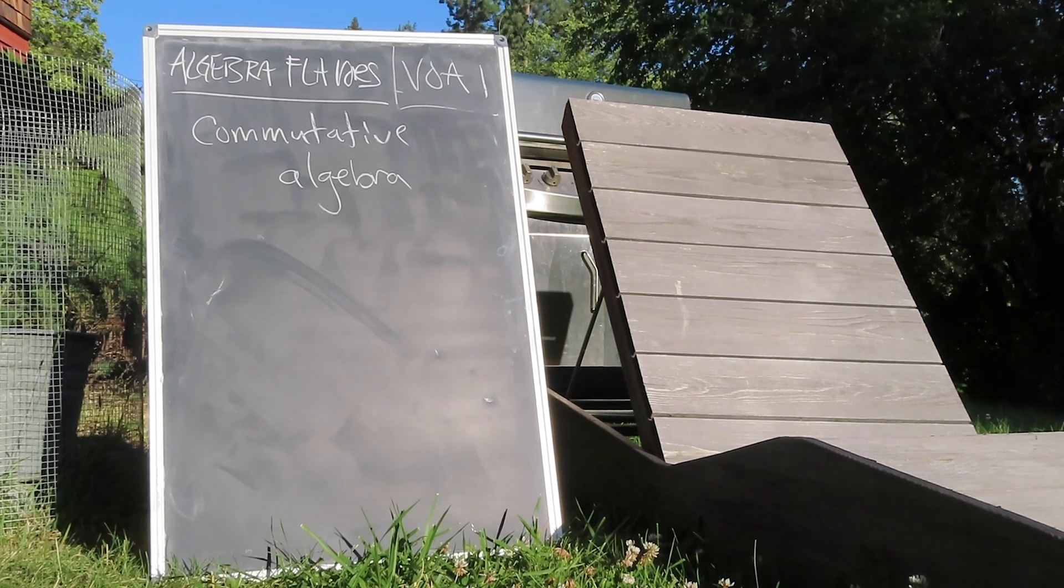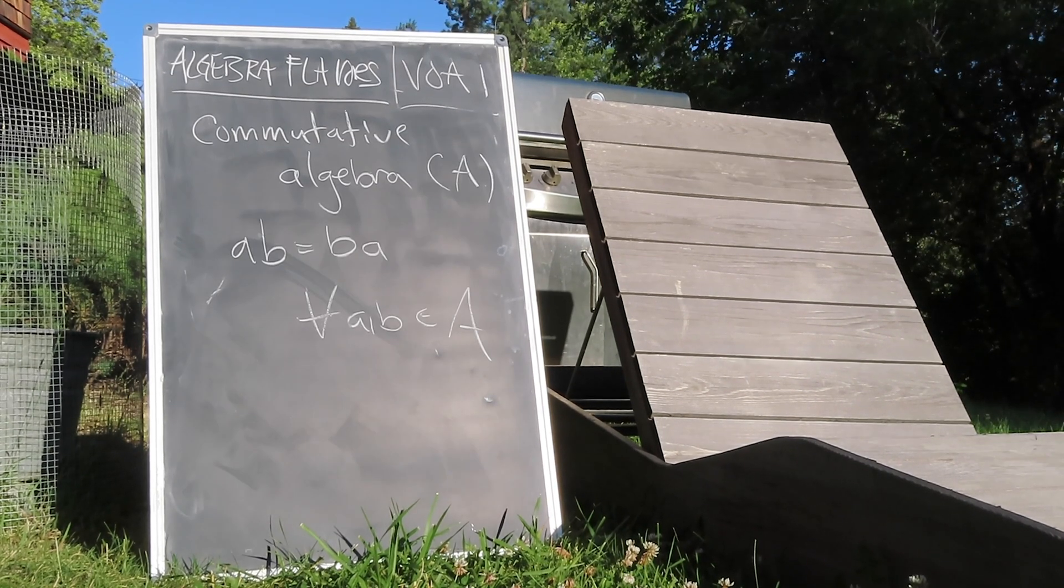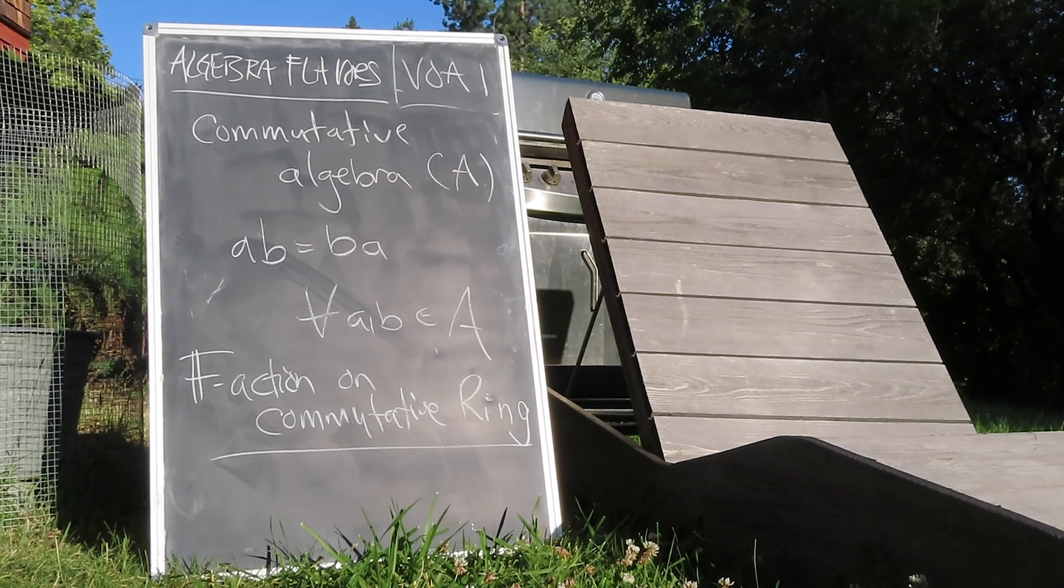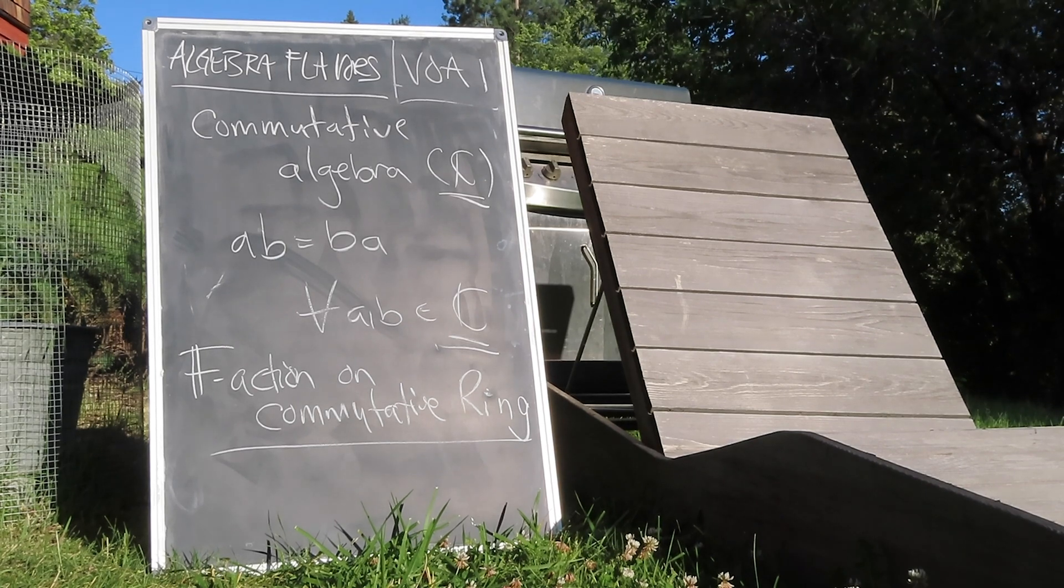Let's now consider some different flavors of algebras. A commutative algebra is, unsurprisingly, an algebra whose vector product commutes. It's a field action over a commutative ring. The complex numbers are a great example of a commutative algebra.